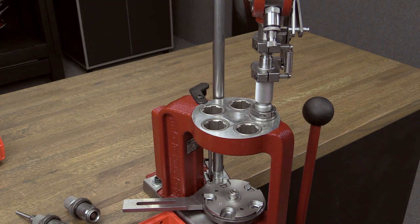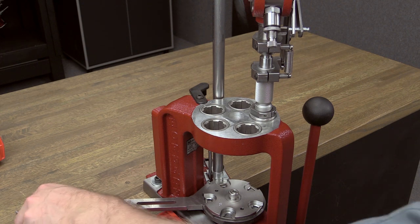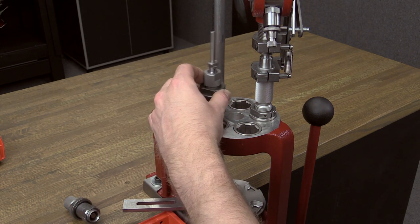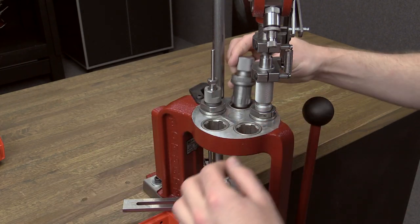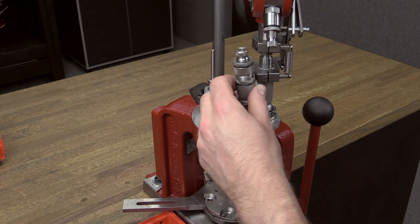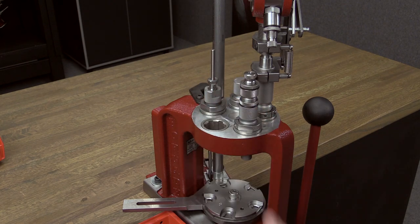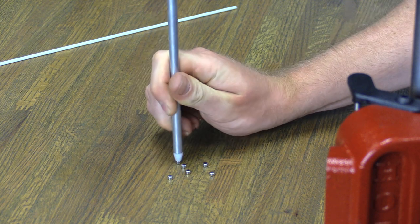In this case, we are setting up to load 9mm luger without using a powder through expander. We will place the full length size die in station 1, the expander die in station 2, the powder drop in station 3, and the seating die in station 4. You will need to adjust the dies to the desired position before you begin reloading.